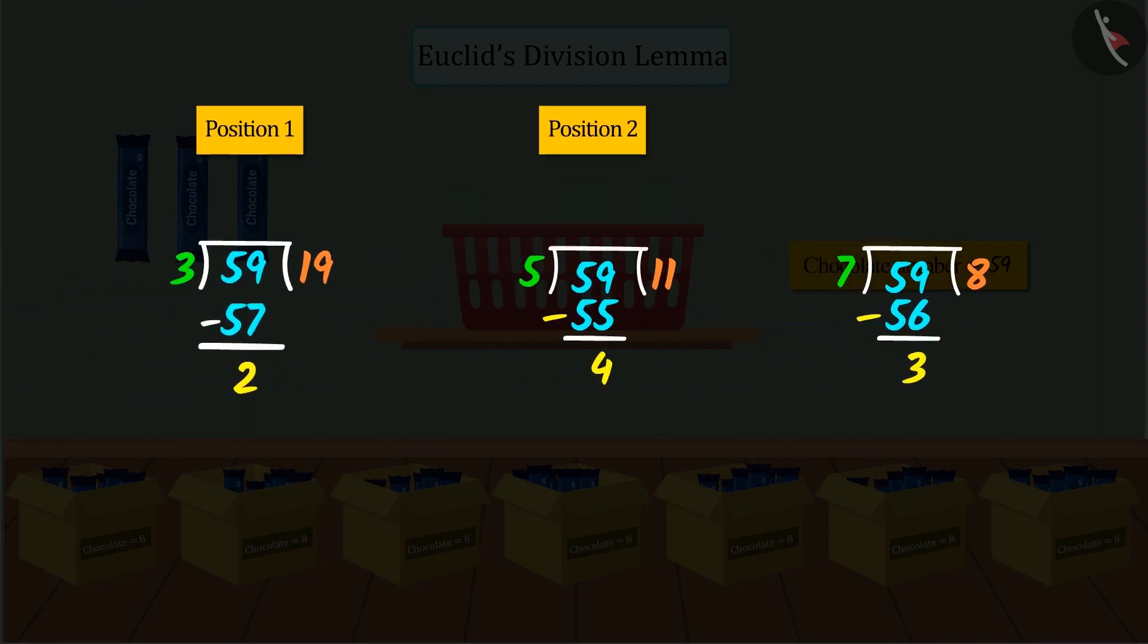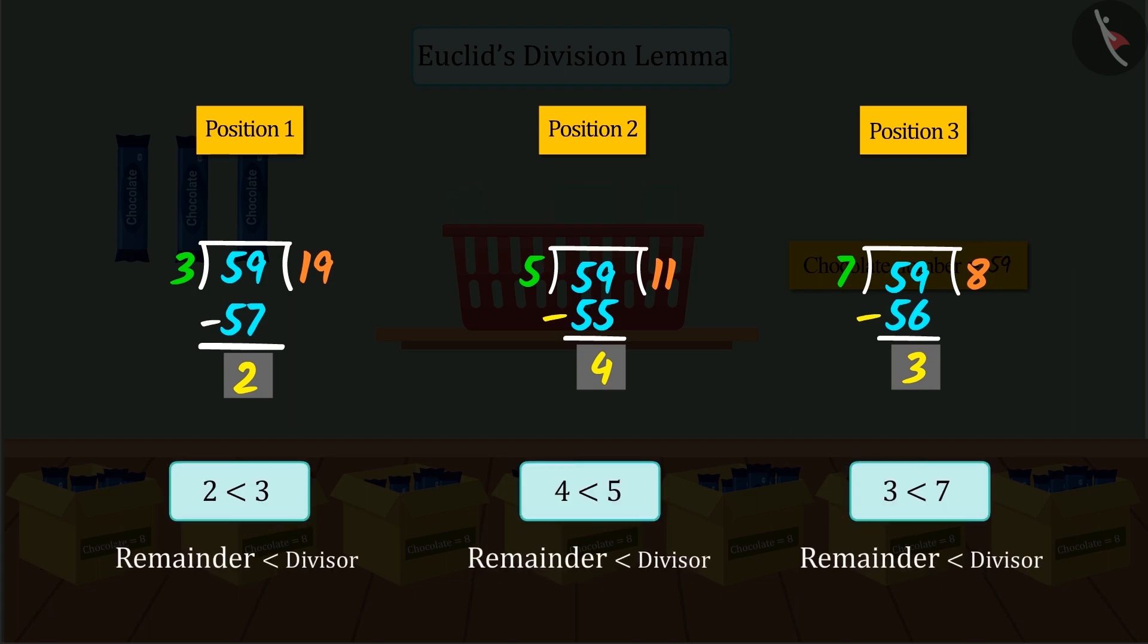In the above 3 situations, we saw that both dividend and divisor are positive integers. When dividing the dividend 59 by divisor 3, 5, 7, we got remainders 2, 4 and 3 respectively. On observing carefully, we get to know that in all the 3 situations, the remainder is less than the divisor.